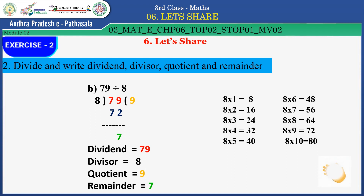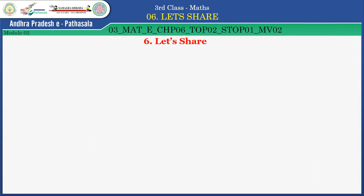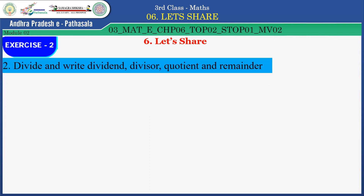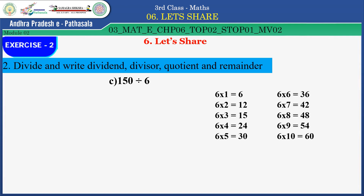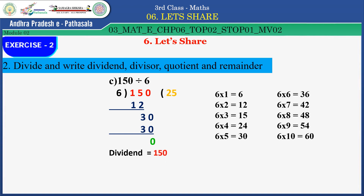Let us do the next problem: 150 divided by 6. Recall the 6 times table. Do this division along with me. Dividend is 150, divisor is 6, quotient is 25, and remainder is 0. Well done, children.